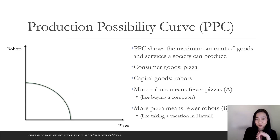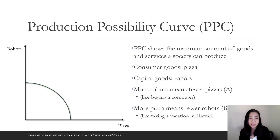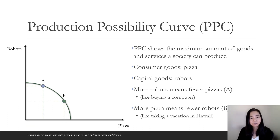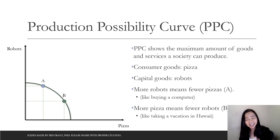Society will have to make the same choice. Suppose in our society we have only two goods — pizza or robots — and we have our production possibility curve. If you want more pizza, you will have fewer robots. If you choose more robots, you will have fewer pizza. Pizza is a consumption good, and robots are the capital goods. If you choose point A, you have more robots and fewer pizza. If you choose point B, you have more pizza and fewer robots — similar to choosing a vacation in Hawaii.